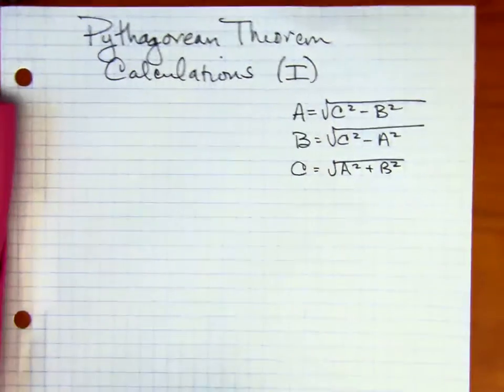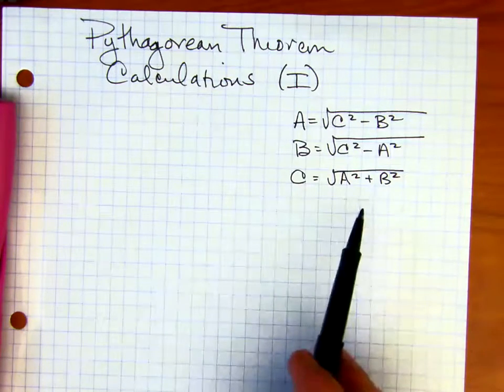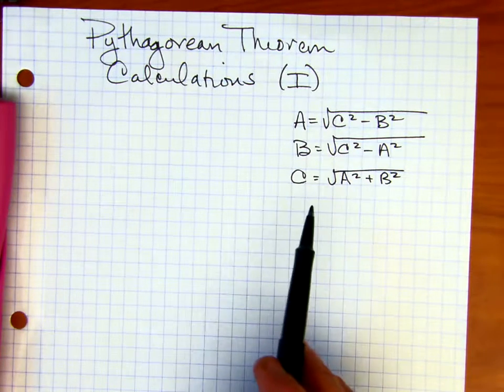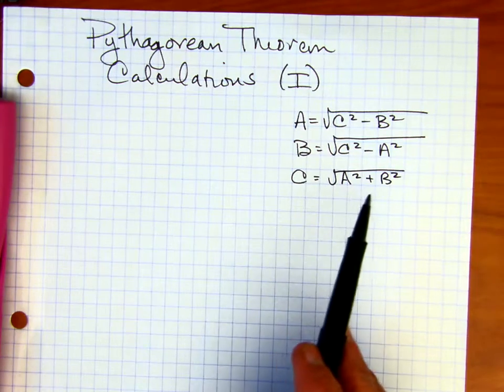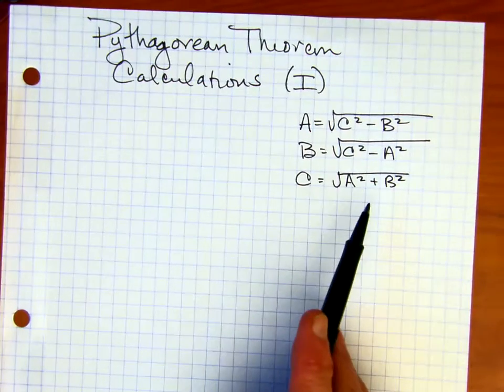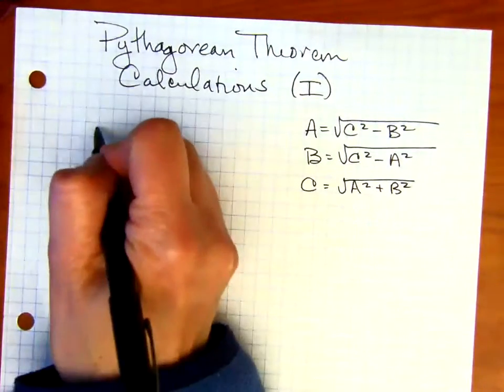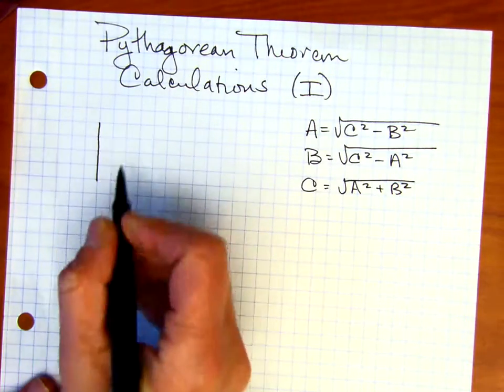We're going to start. Notice that I wrote down the shortcut formulas off to the side just as a quick review to pick the correct formula. I recommend that you commit these formulas to memory. In the first problem, I'm going to go ahead and draw a triangle.